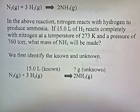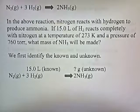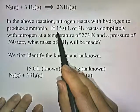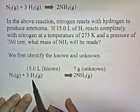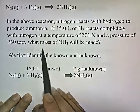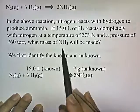In this reaction, nitrogen reacts with hydrogen to produce ammonia. If 15 liters of hydrogen reacts completely with nitrogen at a temperature of 273 Kelvin and a pressure of 760 Torr, what mass of NH₃ will be made? First we need to identify the known and the unknown. They tell us the volume of hydrogen is 15 liters — that's the known. They ask us what mass of NH₃, how many grams of NH₃ — that's the unknown, what we're trying to find.